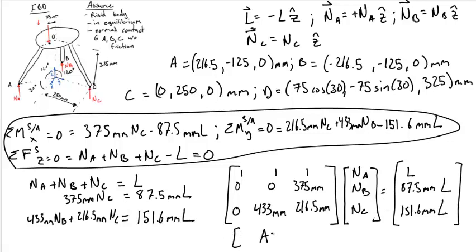We have here what can be set as A matrix times an unknown matrix or unknown column matrix X filled out by the values N_A, N_B, and N_C. It is equal to some known, we'll call it a column vector B matrix, which is the L values which are given.